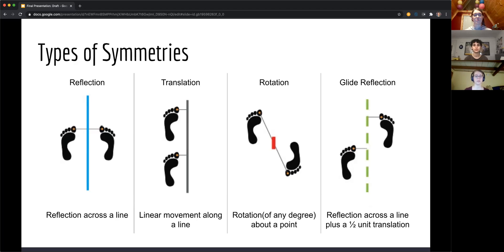So with this new definition of symmetry, there's more than what we commonly think of as reflectional symmetry. Reflection is when you mirror something across a line and it is symmetric. But there's also translation, which is a linear movement along a line. There's rotational symmetry, which is rotation of any degree about a point. If you have n items, the degree that you are rotating would be 360 divided by n. And then the last type of symmetry is a glide reflection. A glide reflection is comprised of a reflection across a line plus a half unit translation.